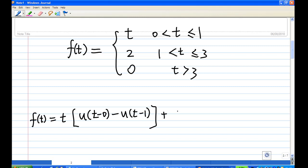Then I want to get a value of t equal to 2, but this is only happening between 1 and 3. So I can write this as 2[u(t-1) - u(t-3)].